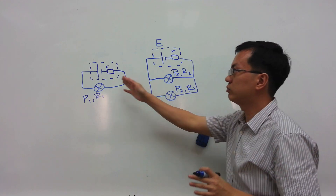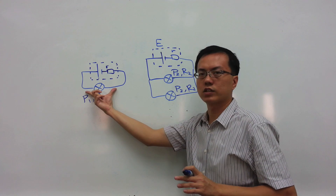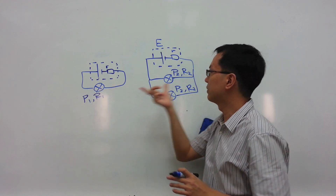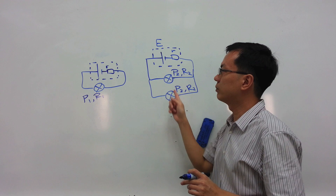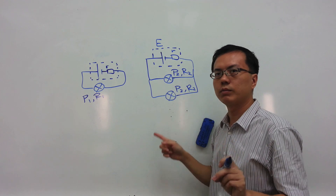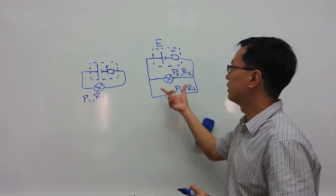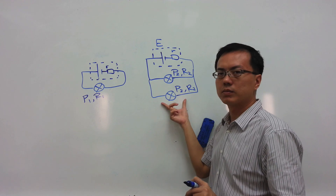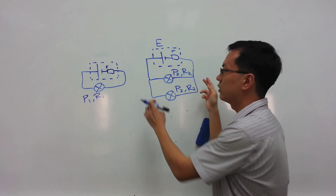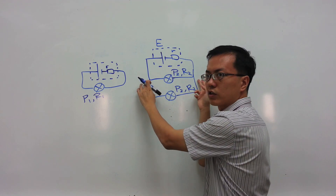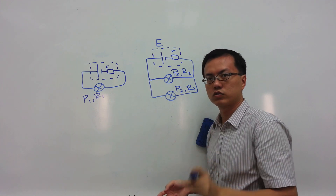If it was an ideal battery, then the potential difference across this light bulb will be the same as the potential difference across here and here, and each of the three light bulbs will glow with exactly the same brightness. But if these two light bulbs are arranged in parallel and there's an internal resistance, the amount of potential difference across these two light bulbs is going to drop.